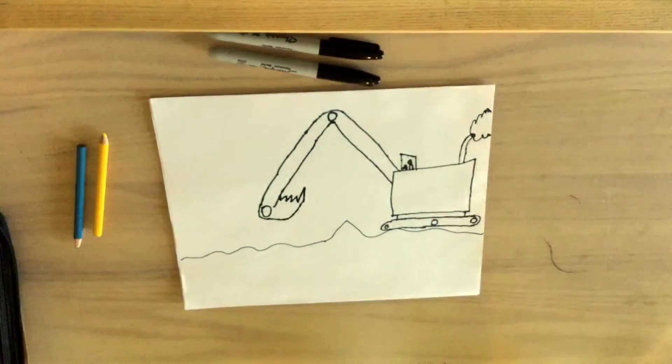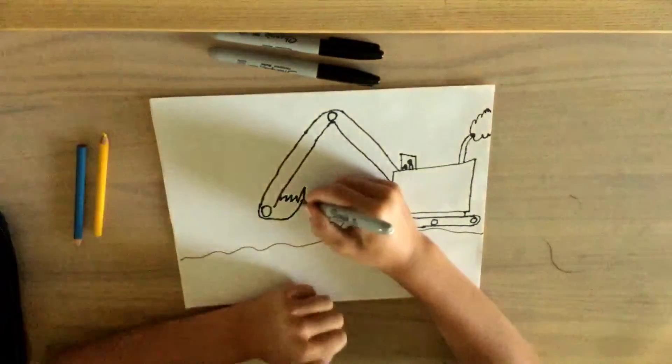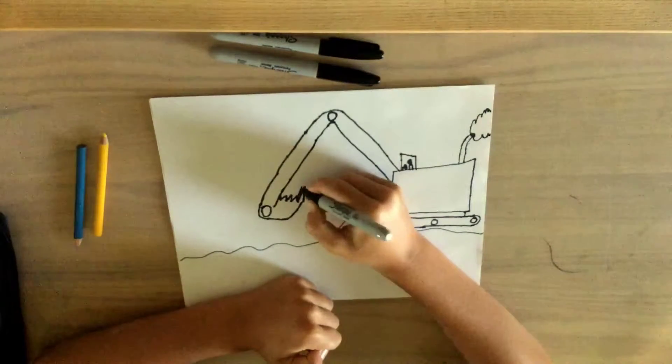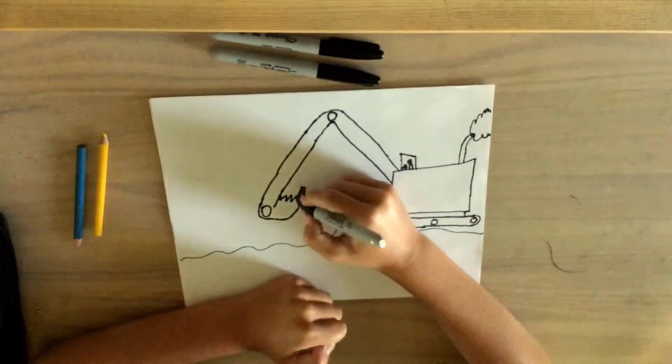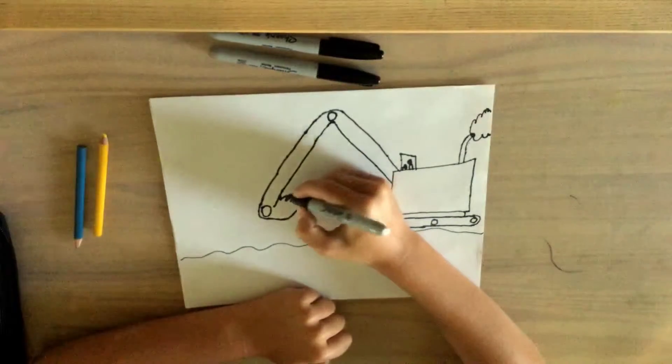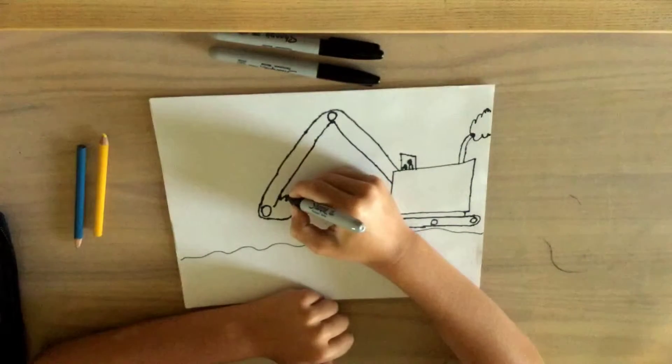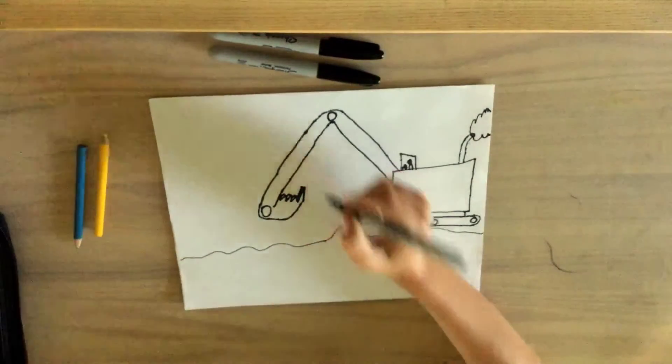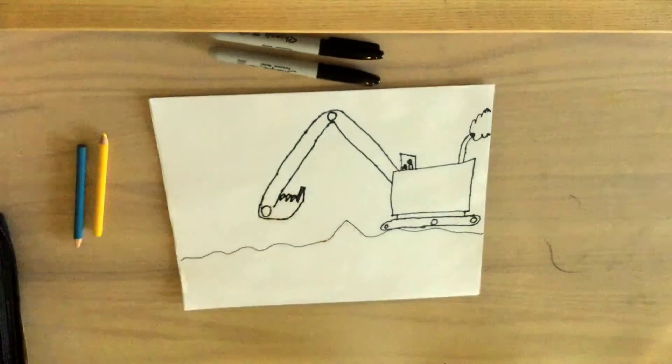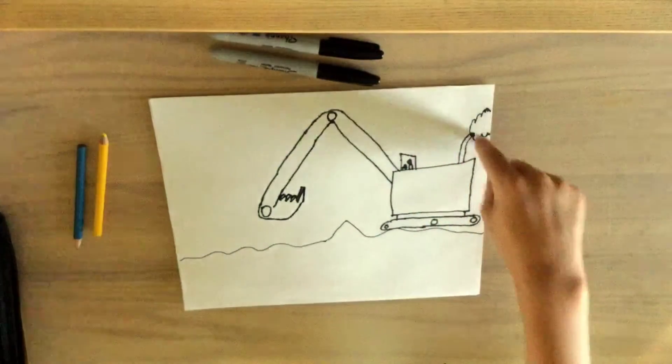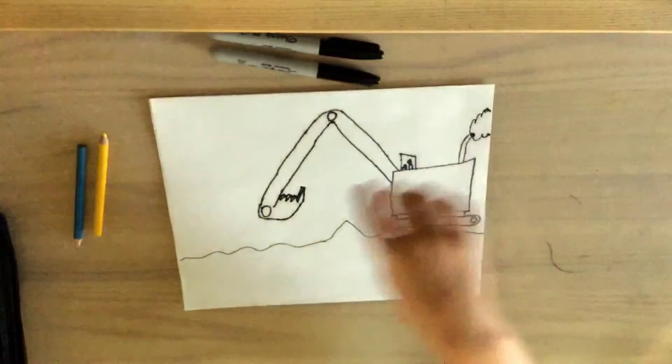So there's your bucket. And if you want to, you could draw this a bit more 3D by adding this. And then you just draw on this side of all of them and connect it with a line. So you could even take your excavator and flip it so that the bucket's on this side and the steam's on this side.